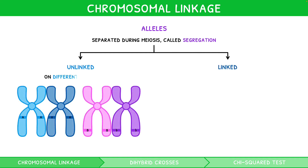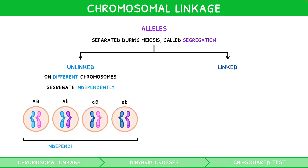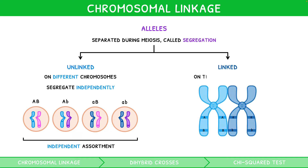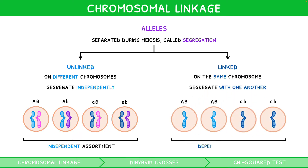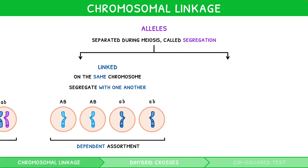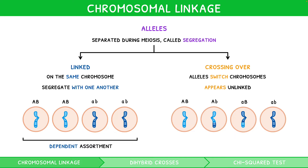Unlinked genes are on different chromosomes. As a result, they segregate independently of one another, called independent assortment. Linked genes are on the same chromosome, so they segregate with one another, called dependent assortment. However, note that if linked genes are far apart on the chromosome and crossing over occurs, these genes switch chromosome and so appear unlinked, because they undergo independent assortment.